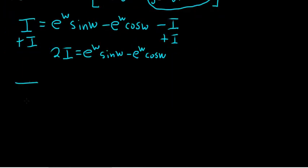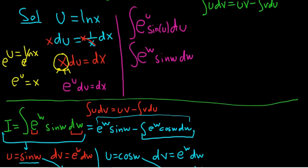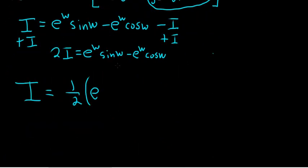So i is equal to one-half parentheses. I'll leave it in parentheses. E to the w. Oh, what was w? I think w. Let's go back up to the beginning really quick. So u was ln x, right? Then I became abusive and I called it w. So that's our w. So yeah, yeah. So w is ln x.